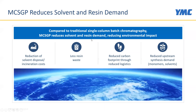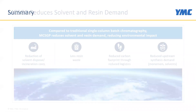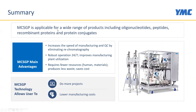MCSGP also reduces solvent and resin demand compared to traditional single-column batch chromatography, thereby reducing environmental impact. In summary, MCSGP is applicable for a wide range of products and increases manufacturing speed and QC by eliminating re-chromatography. It improves plant utilization through robust 24/7 operation and requires fewer human and material resources, produces less waste, saves costs, enables more projects, and lowers manufacturing costs overall.